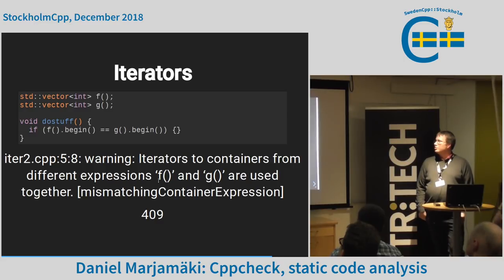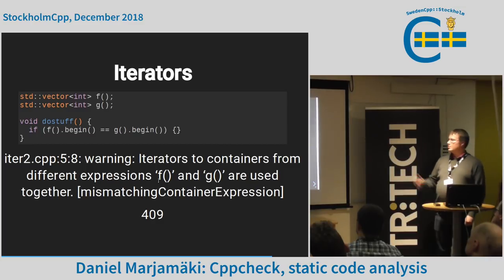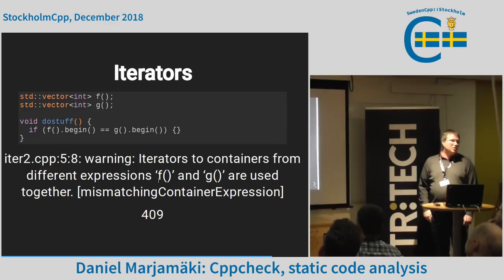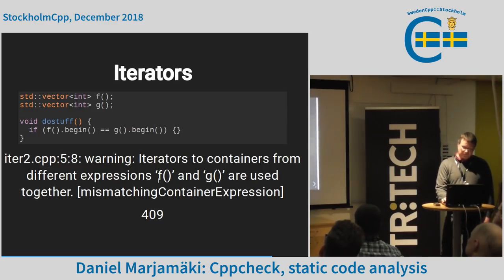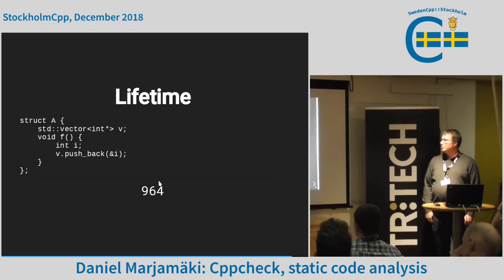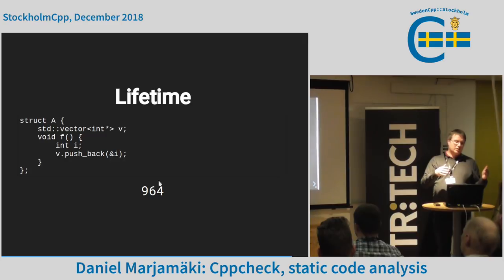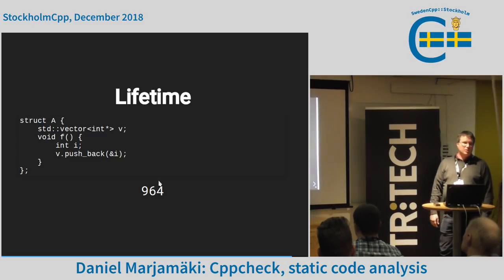We can have various checks for iterators. Here are two different expressions that create iterators and then compare them — there are 409 such bugs in Debian. In many cases this won't crash but means some code is unreachable or always executes. We also have lifetime checkers that check how local variables are captured or stored in containers and lambdas — for example, if you capture a local variable in a lambda and then return it, we will warn. There are 964 such bugs related to variables leaving their scope.